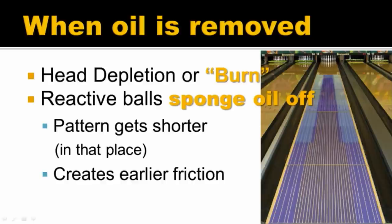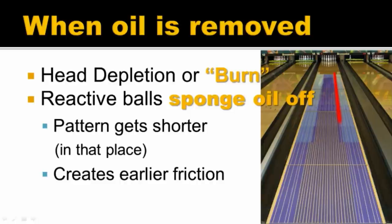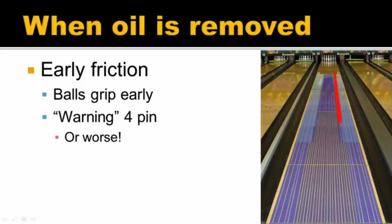When oil is removed more savagely than this, we see head depletion, also known as burn. This is where the reactive bowling balls are really ripping in and sponging oil off that spot. The balls are rolling over a part of the lane and we're getting a red line where the oil is removed. When this is more definitive, we actually see that the pattern gets shorter in that place, meaning we have earlier friction to deal with. Early friction usually presents as the ball gripping the lane too early. You may get a warning from your centre, such as leaving a 4-pin out of the pocket for a right-hander, or a 6-pin for a left-hander.